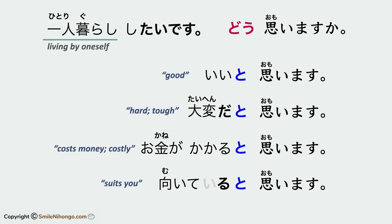If you want to assure the person or sound more convincing, you can use the particle よ at the end: いいと思いますよ、大変だと思いますよ、お金がかかると思いますよ、向いてると思いますよ。